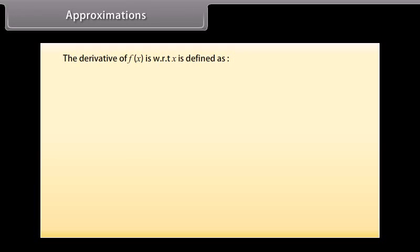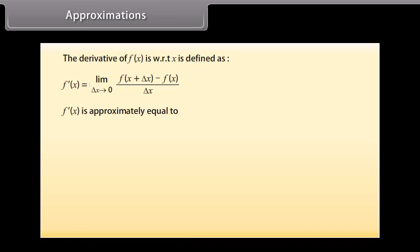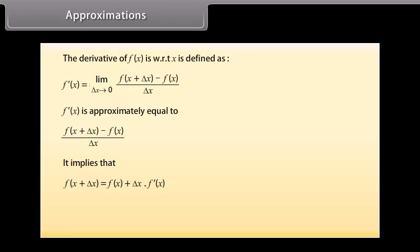Approximations. The derivative of f of x with respect to x is defined as f dash of x equals the limit as delta x approaches 0 of f of x plus delta x minus f of x, divided by delta x. From this, f dash of x is approximately equal to f of x plus delta x minus f of x, divided by delta x. This implies that the approximate value of f of x plus delta x equals f of x plus delta x into f dash of x.